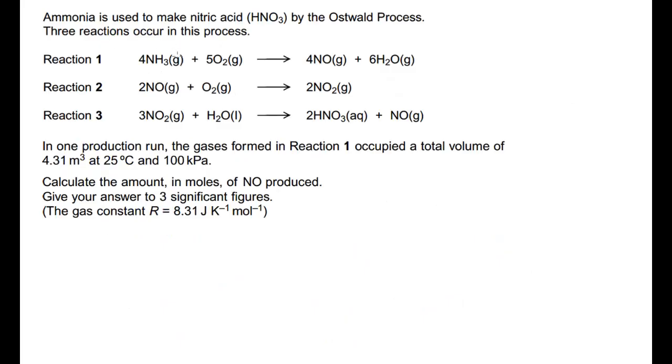Okay, so first question. Ammonia is used to make nitric acid, HNO3, by the Oswald process. Three reactions occur in this process. Reaction one, reaction two, reaction three. And then we go on to, in one production run, the gases formed in reaction one, so we're looking at this one here, occupy a total volume of 4.31 metres cubed, 25 degrees Celsius and 100 kilopascals. Calculate the amount in moles of NO, nitrogen oxide, nitrogen monoxide produced. Give your answer to three significant figures. And you can see here, it gives you this gas constant, equal to 8.31 joules per Kelvin per mole.